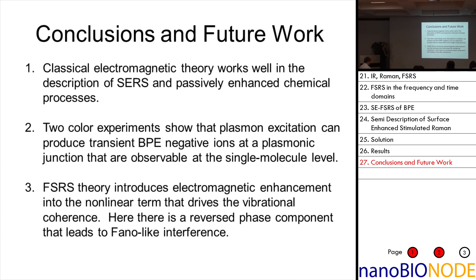So I hope I've convinced you that electromagnetic theory works well, and that's really nice. Once you understand and believe all that, you can start doing these experiments — like these two-color experiments — where you're looking at electron transfer processes at nearly the single molecule level. And then in addition, we now have these time-resolved capabilities that come from the FSRS measurement, and we now think we understand what the line shapes mean. Thank you.